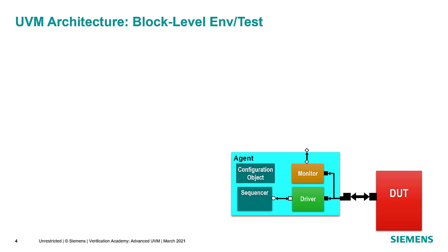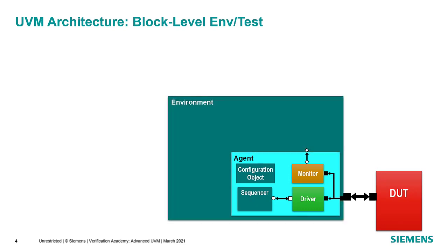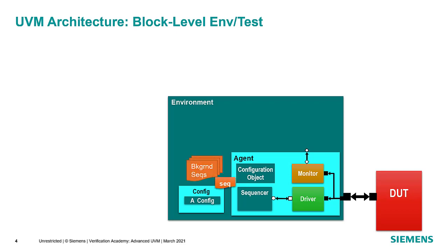The agent is connected to the DUT via the virtual interface and instantiated inside an environment — a component that serves as the structural test bench, instantiating all components needed to verify the DUT. A block-level environment typically has one agent per interface. The environment gets its configuration first and uses it to configure the agents. It may also include default sequences for background traffic, but we recommend against starting sequences in your environment unless you're sure what you're doing.